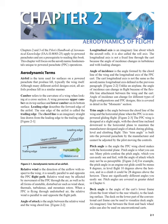Angle of incidence is the angle formed by the cord line of the wing and the longitudinal axis of the PPC cart. The cart longitudinal axis is not the same as the aerodynamic longitudinal axis. Unlike an airplane, the angle of incidence can change in flight because of the flexible line attachment between the wing and the cart, and can change for different types of flight configurations and PPC designs. Trim angle is the angle between the cord line of the wing and the horizontal plane when the PPC is in non-powered gliding flight. The PPC wing is designed at a slight angle, with the cord line inclined downward to the horizontal plane to maintain the manufacturer-designed angle of attack during gliding, level, and climbing flight. This trim angle is built into the powered parachute by the manufacturer and cannot be adjusted by the pilot moving the controls.